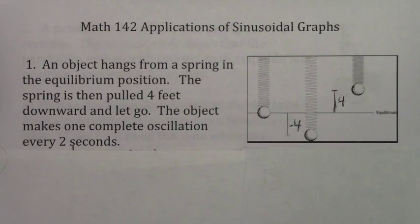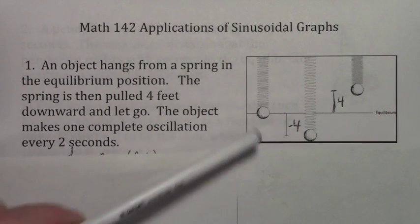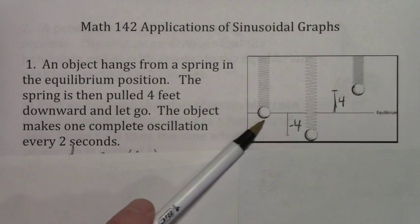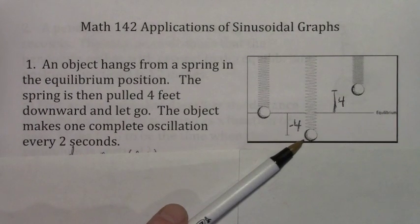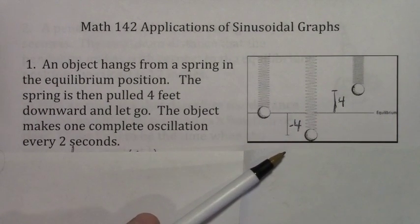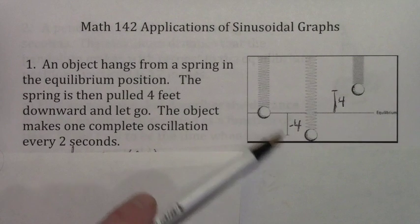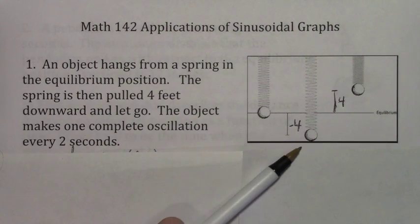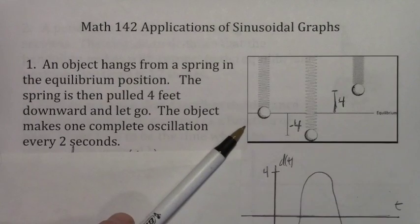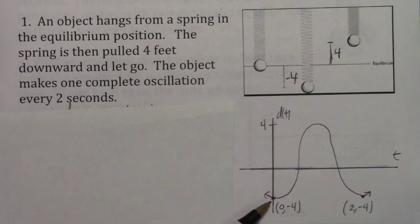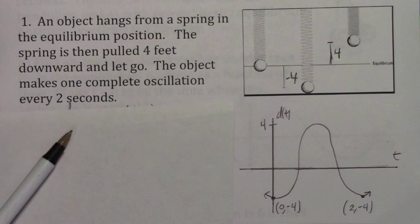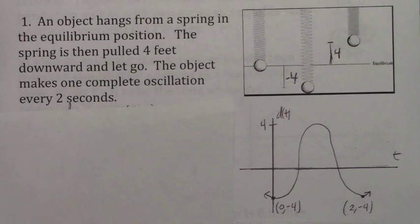In this first problem we've got this spring and we attach a mass to it. We pull the mass down 4 feet below the equilibrium position and then let go. What you end up with is called harmonic motion — the ball goes back and forth. Notice that t equals 0 is when you let go. At t equals 0, the ball is negative 4 feet below, and since it takes 2 seconds to complete one cycle, t equals 2 seconds is also negative 4 feet below.